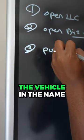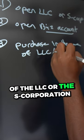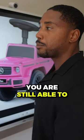Step number three is to purchase the vehicle in the name of the LLC or the S-Corporation. If you happen to purchase it in your own personal name, you are still able to write this off.